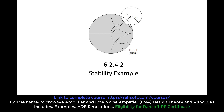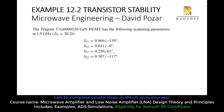In this part we are going to show an example for stability and confirm what we have learned in the previous section. We had lots of formulas and I understand it's kind of confusing, but in this example we are going to understand everything and see all the steps we need to find the stability for our amplifier. Let's look at a very simple example, again from David Pozar's book.